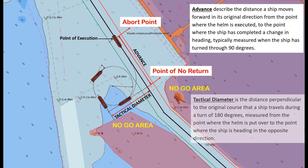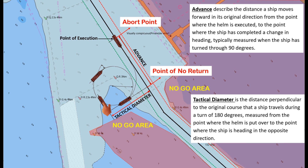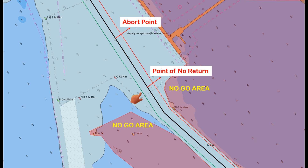Tactical diameter is the distance perpendicular to the original course that a ship travels during a turn of 180 degrees, measured from the point where the helm is executed to the point where the ship is heading in the opposite direction. This turn is affected by factors such as ship speed, rudder angle, hull form, and load condition. Additional factors that may prevent achieving this turn include external forces such as wind and current, so making allowances may be necessary to achieve the turn safely.